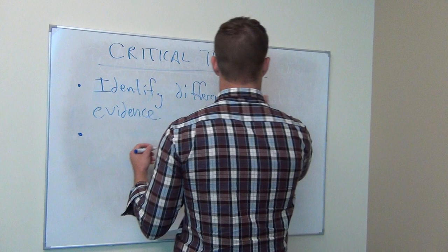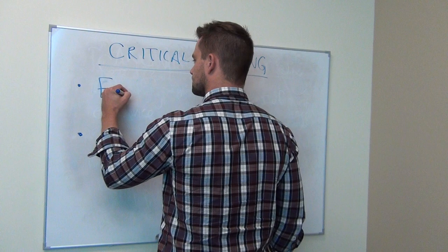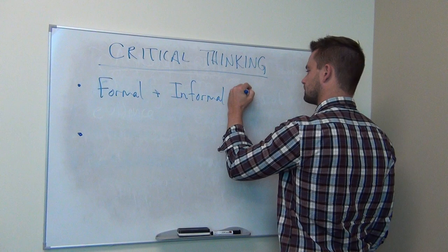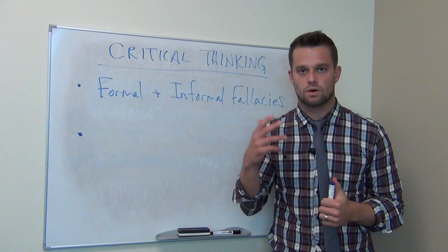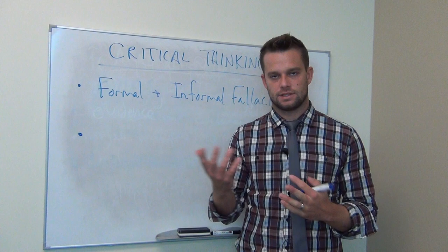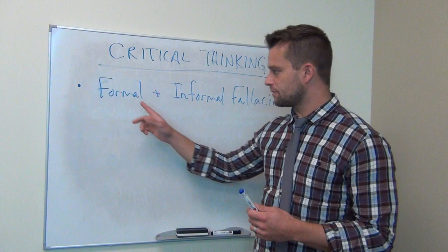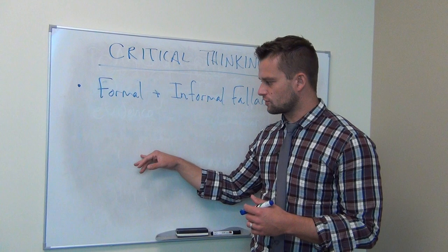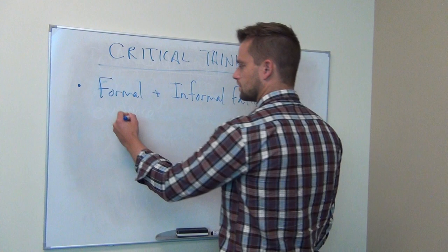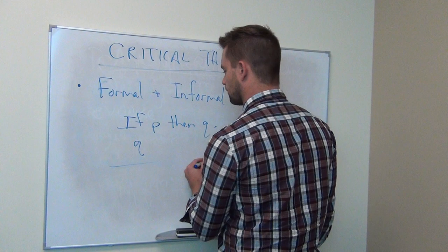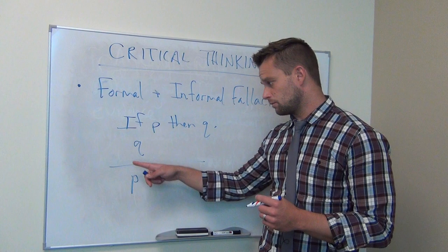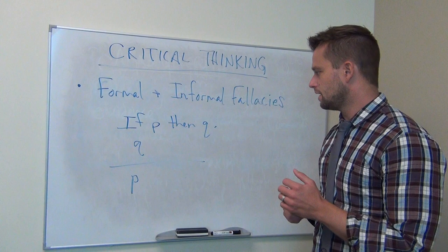Critical thinkers have knowledge of both formal and informal fallacies. When somebody presents a deductive argument, sometimes people run into formal logical fallacies, where the structure of their argument is such that even with true premises, the conclusion could still be false. One example is: if P then Q; Q; therefore P. For instance, if it rains, we won't have a picnic — we didn't have a picnic, therefore it rained. That's a formal logical fallacy called affirming the consequent.